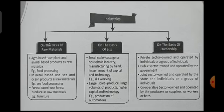On the basis of ownership, we divide industries into four parts: private sector, public sector, joint sector, and cooperative sector. The private sector is owned and operated by individuals. The public sector is owned by the government — examples include NTPC and SAIL.